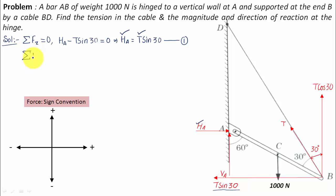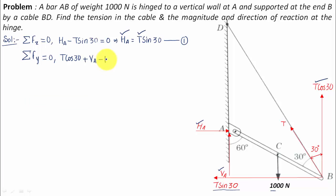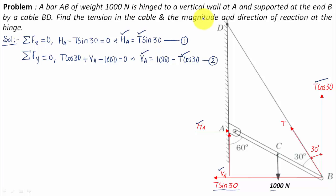Applying the second equation of equilibrium, summation of Fy equals zero: T cos 30 acts upward (positive), VA acts upward (positive), and the 1000 Newton weight acts downward (negative). So: T cos 30 plus VA minus 1000 equals zero, giving VA equals 1000 minus T cos 30. This is equation number two. Again, once we find T we can find VA.